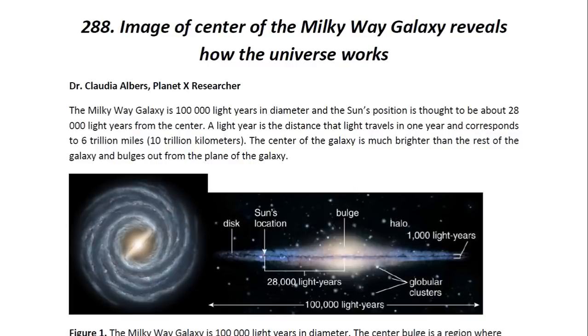The Milky Way galaxy is 100,000 light years in diameter, and this is illustrated here. This would be what our galaxy is expected to look like from outside if viewed edge on. It has this bulge called the central bulge, which is much brighter. A light year is the distance that light travels in one year and corresponds to 6 trillion miles or 10 trillion kilometers. Our sun is expected to be about here, about 28,000 light years from the center of the galaxy.